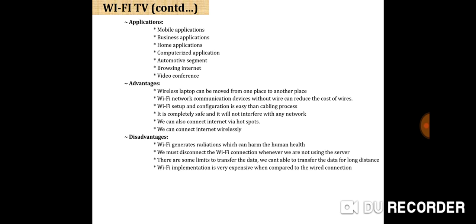Applications where Wi-Fi is normally used include mobile applications, business applications, home applications, computerized applications, automatic systems, browsing the internet, and video conferencing. Advantages: a wireless laptop can be moved from one place to another. Wi-Fi network devices without wire can reduce the cost of wiring. Wi-Fi setup and configuration is easier than the cabling process. It is completely safe and will not interfere with any network. We can also connect to the internet via hotspots and wirelessly.